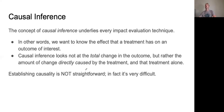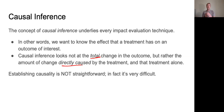We're studying randomized treatment design — randomized control trials. Remember, what we're trying to do is establish causal inference. By causal inference, I mean how much effect a treatment has on an outcome of interest. Causal inference looks not at the total change in the outcome, but rather the amount of change directly caused by the treatment and that treatment alone. Establishing causality is not straightforward — it's actually quite difficult. We talk about this a lot in economics: what's the difference between correlation and causation? We want to know the change that's directly attributable to some sort of treatment.